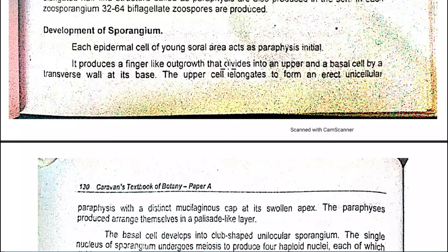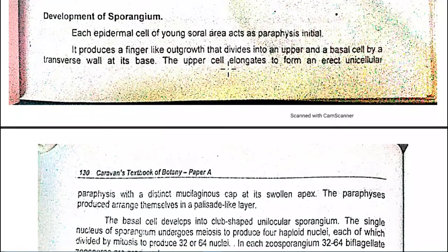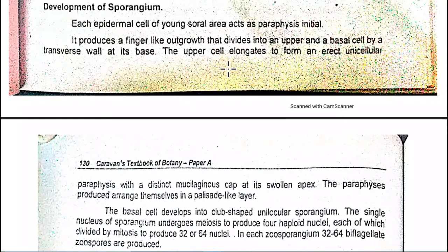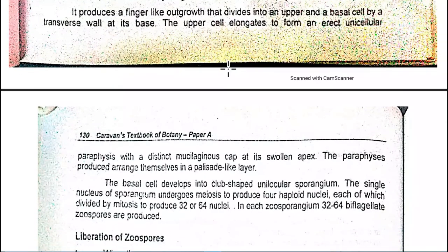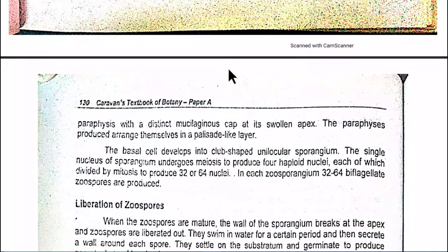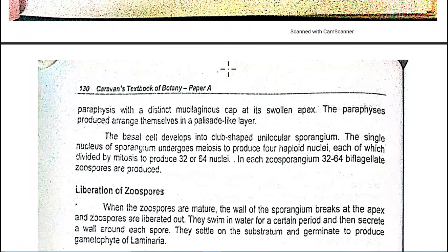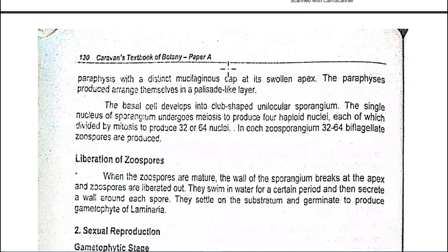The upper cell elongates to form an erect unicellular structure — the paraphysis — with a distinct mucilaginous cap at a swollen apex or tip. The paraphysis cells produced are arranged in a parallel palisade-like layer.